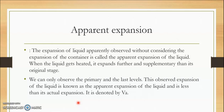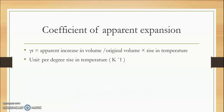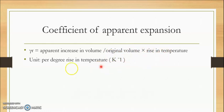You can observe that when you talk about real expansion, its height is more, but when you talk about apparent expansion, it is less. For the coefficient of apparent expansion, we use the apparent increase in volume divided by original volume into rise in temperature. The unit is the same — per degree rise in temperature — and we can use either Kelvin or degrees Celsius.